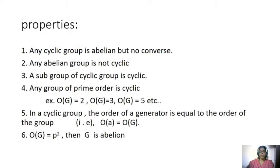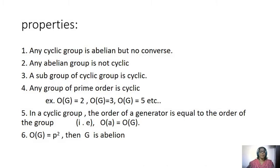Some properties about cyclic groups: any cyclic group is abelian, but its converse is not true — abelian groups are not necessarily cyclic groups. The subgroup of a cyclic group is cyclic. Any group of prime order is cyclic. For example, groups of order 2, 3, or 5 are cyclic groups.